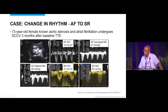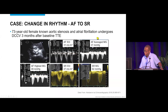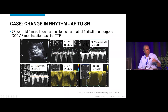After cardioversion to sinus rhythm, the forward stroke volume improved from 31 to 47 mL/m², and the mean gradient rose to 62 mmHg. This illustrates what current guidelines recommend — averaging five beats — but we believe the single highest mean gradient should be used, recognizing that even that single highest gradient in AFib may not be as high as the gradient obtained in sinus rhythm.